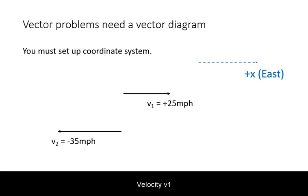Velocity v1 is 25 miles per hour east. This will be represented as positive 25 miles per hour. Velocity v2 is 35 miles per hour west. Because it is in the opposite direction from our declared positive x, we will represent this as negative 35 miles per hour.